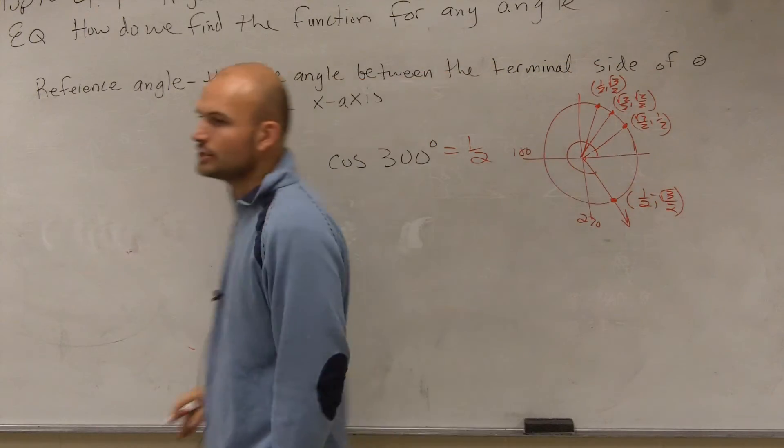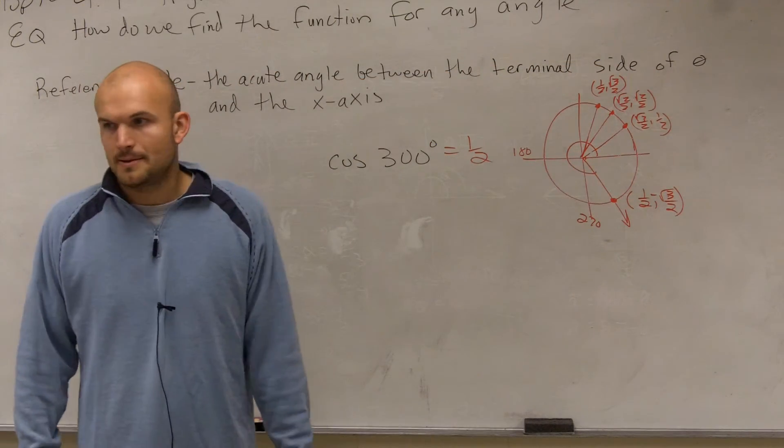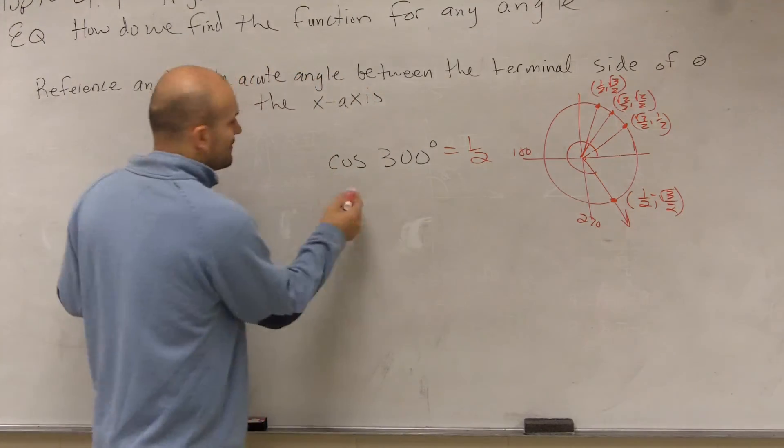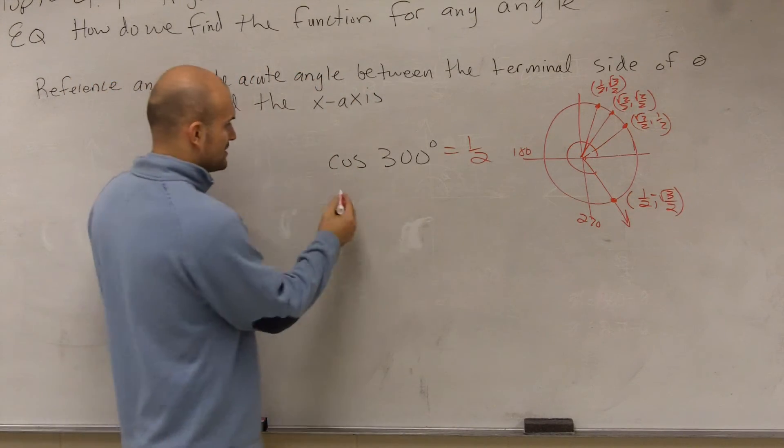So, ladies and gentlemen, 300 degrees is in what quadrant? Fourth quadrant. So when we have the fourth quadrant, how do we determine what the reference angle is?